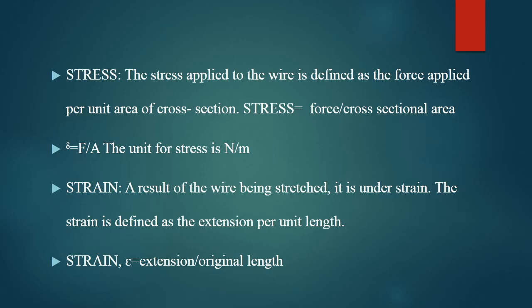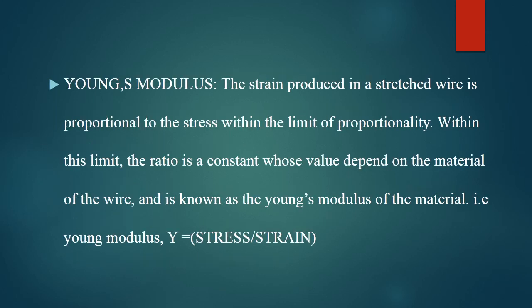The formula for stress is force per cross-sectional area — F by A — and its unit is Newton per meter squared. Strain is defined as the extension per unit length, that is, extended length divided by original length — denoted as x by L.